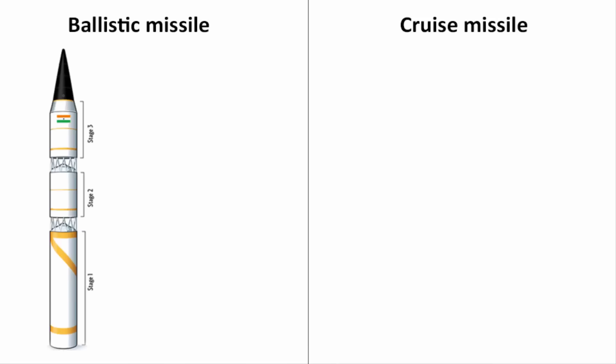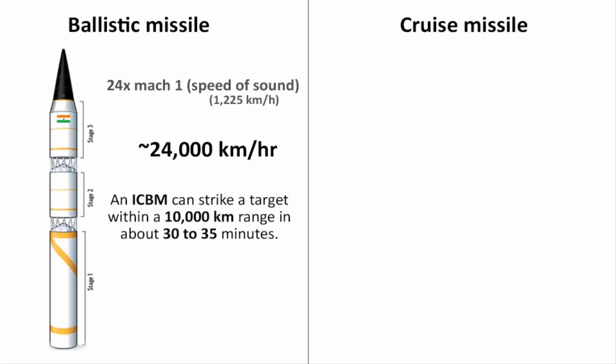Now if you look at the speed of a ballistic missile. The maximum velocity a ballistic missile can achieve is around 24,000 km per hour. I am giving a rough estimate. An ICBM can strike a target within a 10,000 km range in about 30 to 35 minutes.